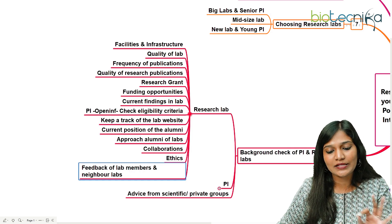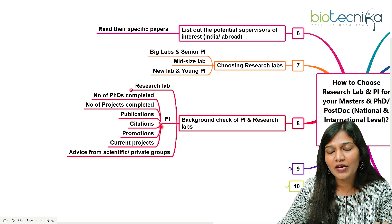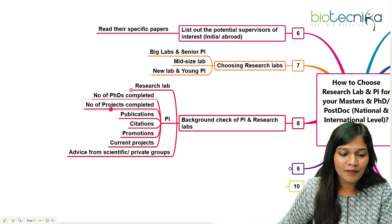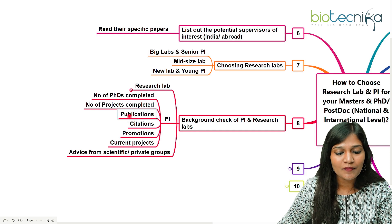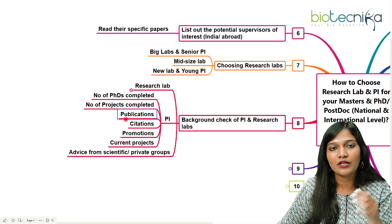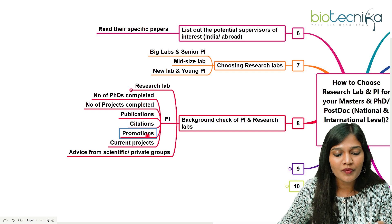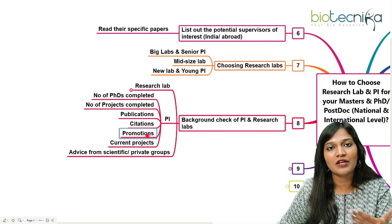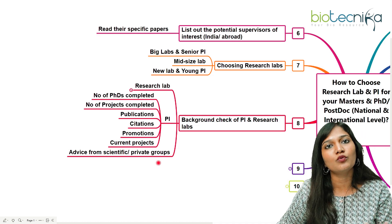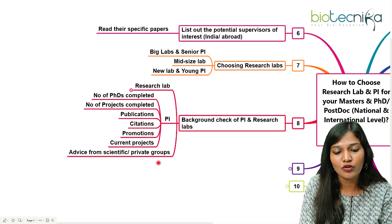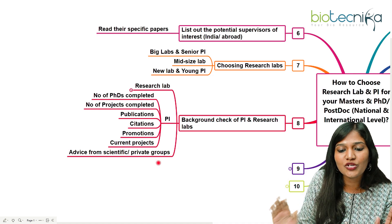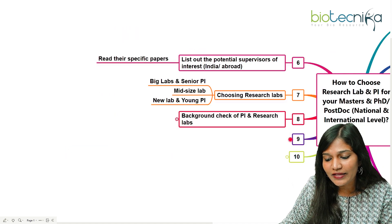You also need to do a background check on the PI specifically. Check how many PhDs have come out of the lab, how many projects have been completed, the number and quality of publications — including recent ones, not just from ten years ago — what citations look like, whether the PI has been promoted through scientist positions, what current projects are ongoing, and take advice from scientific or private groups on social media about this laboratory.